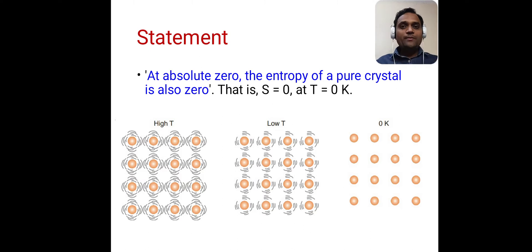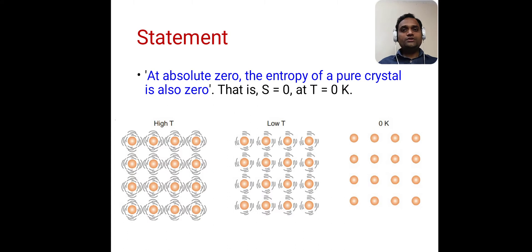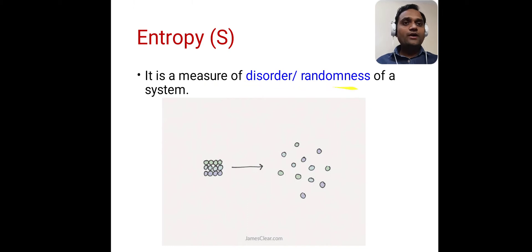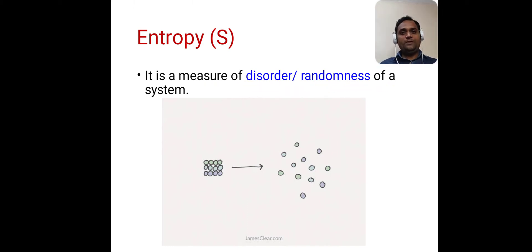This is about the statement of the third law of thermodynamics. Now, there can be a question in your mind: what is meant by entropy? Entropy, which is denoted by S, is a measure of disorder or randomness of a system.